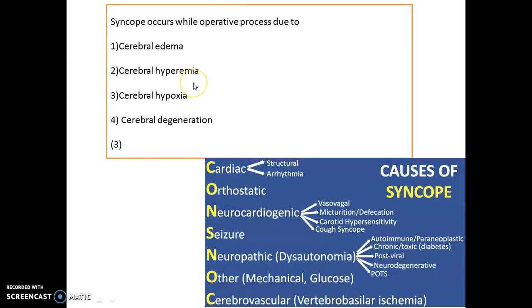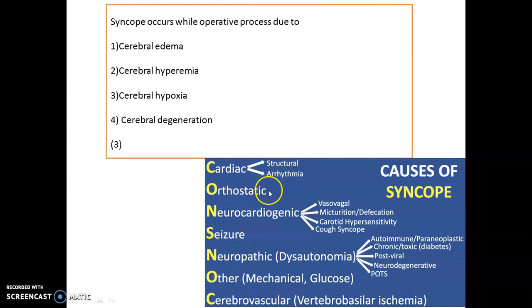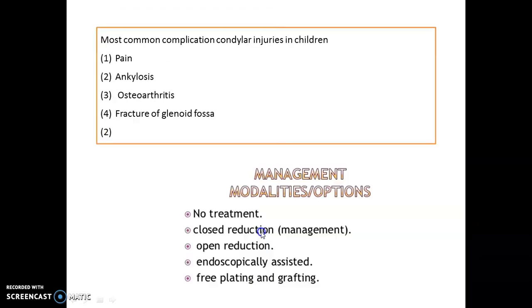Syncope occurring during an operative process is because of cerebral hypoxia. Remember all the causes of syncope with the mnemonic 'CONS NOC': C for cardiac (structural or arrhythmia), O for orthostatic hypotension, N for neurocardiogenic, S for seizure/neuropathic disorders, and other causes including mechanical, glucose-related, and cerebrovascular disorders.